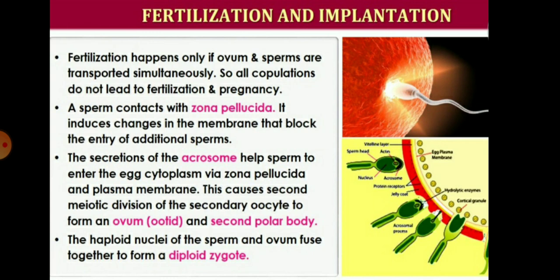Fertilization and implantation is very important in the process of sexual reproduction. We know fertilization happens only if the ovum and the sperms are transported simultaneously. Not all copulations lead to fertilization and pregnancy. A sperm contacts with the zona pellucida layer of the ovum, inducing changes in the membrane that block entry of additional sperm. The secretion of the acrosome helps the sperm to enter the egg cytoplasm via the zona pellucida layer and the plasma membrane.